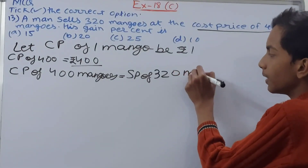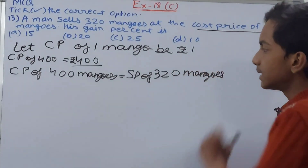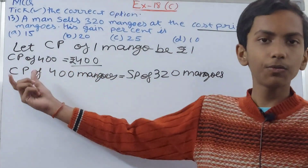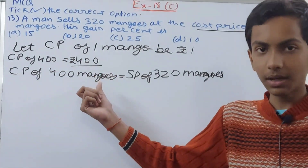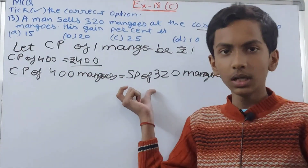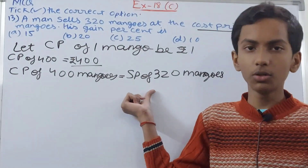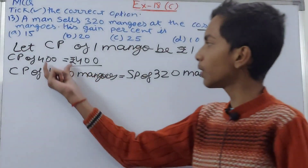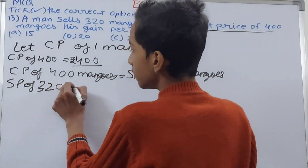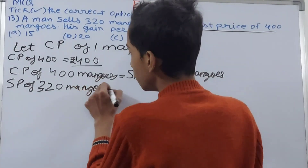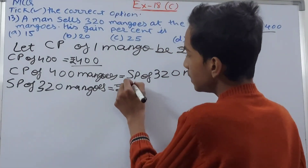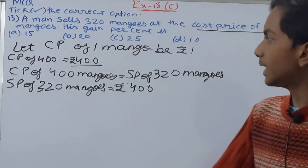From this we can find the SP of 320 mangoes. Since the CP of 400 mangoes is ₹400 (as we assumed), the SP of 320 mangoes is also equal to ₹400.